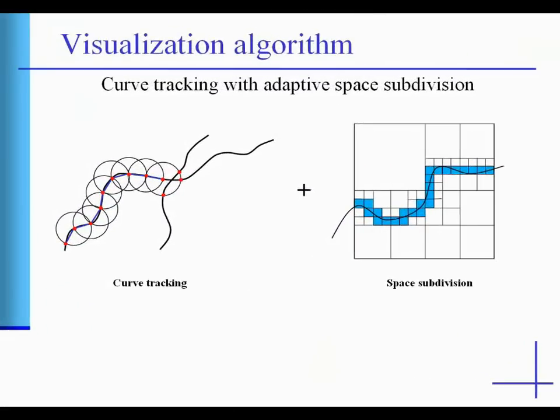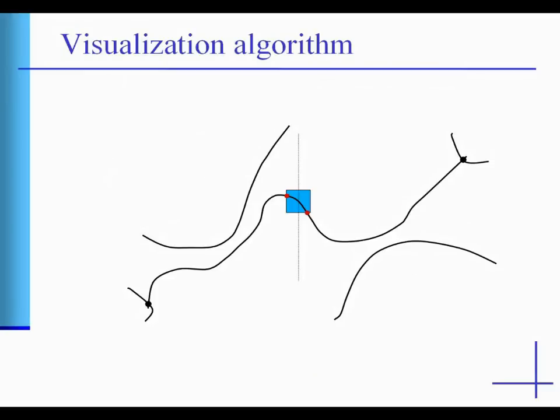In the visualization step, each x-monotone curve arc is rasterized separately regardless of how close to its neighboring branches it resides. The curve tracking algorithm starts with a seed point lying on a curve arc and traces the arc in both directions towards the end points.